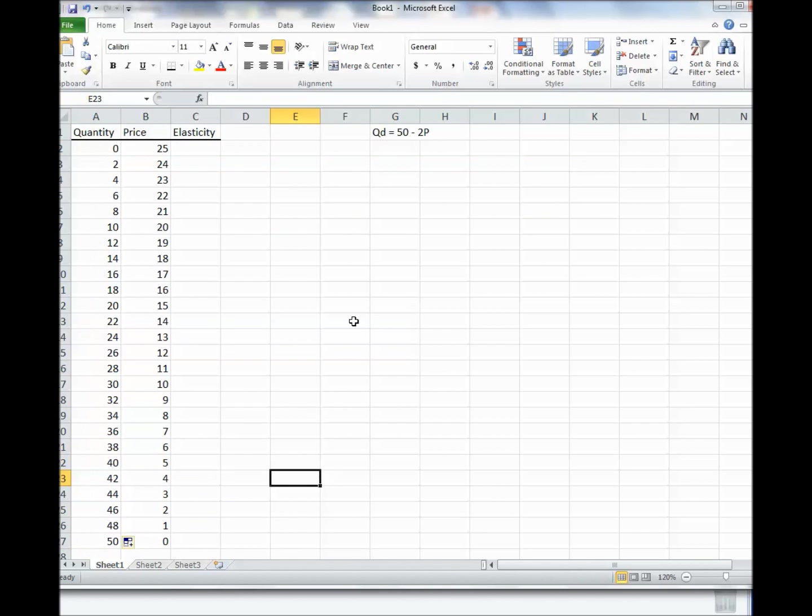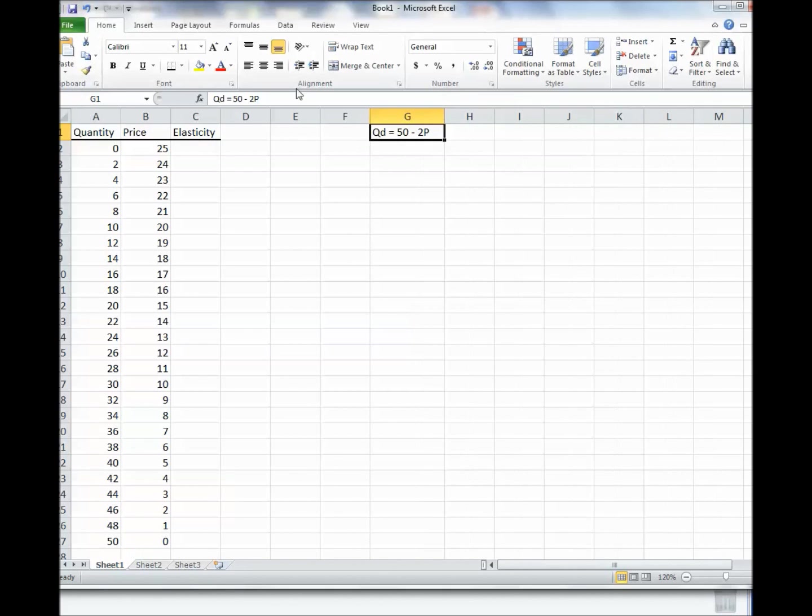Now the formula for elasticity is 1 over the slope times P over Q. So we need to find the slope of this equation. We need to find the slope of that equation right there. And I've done it so long I can kind of do them in my head. I can see that the slope is 1 half.